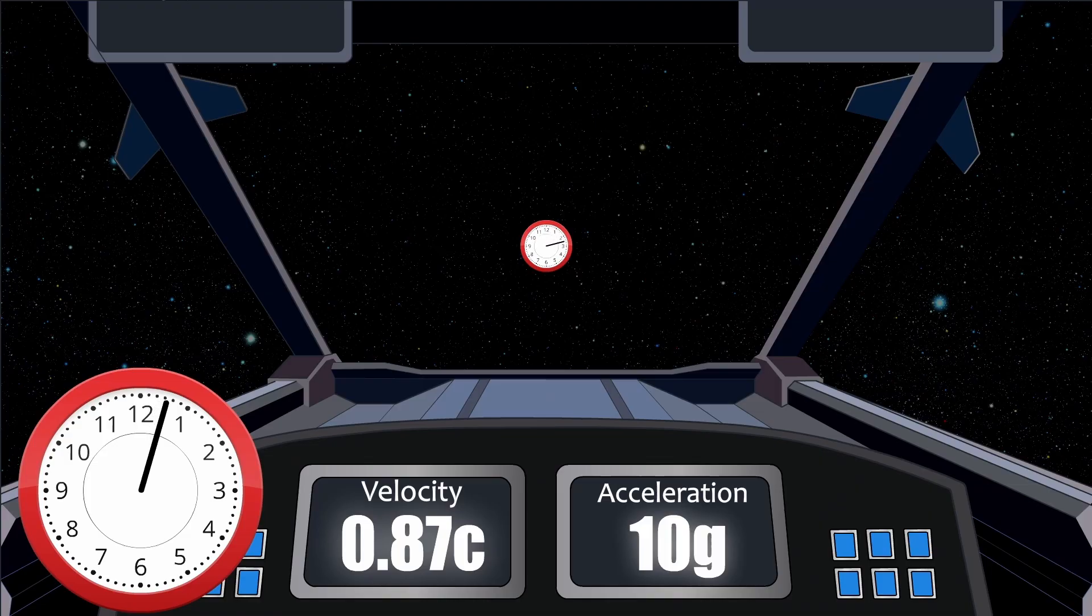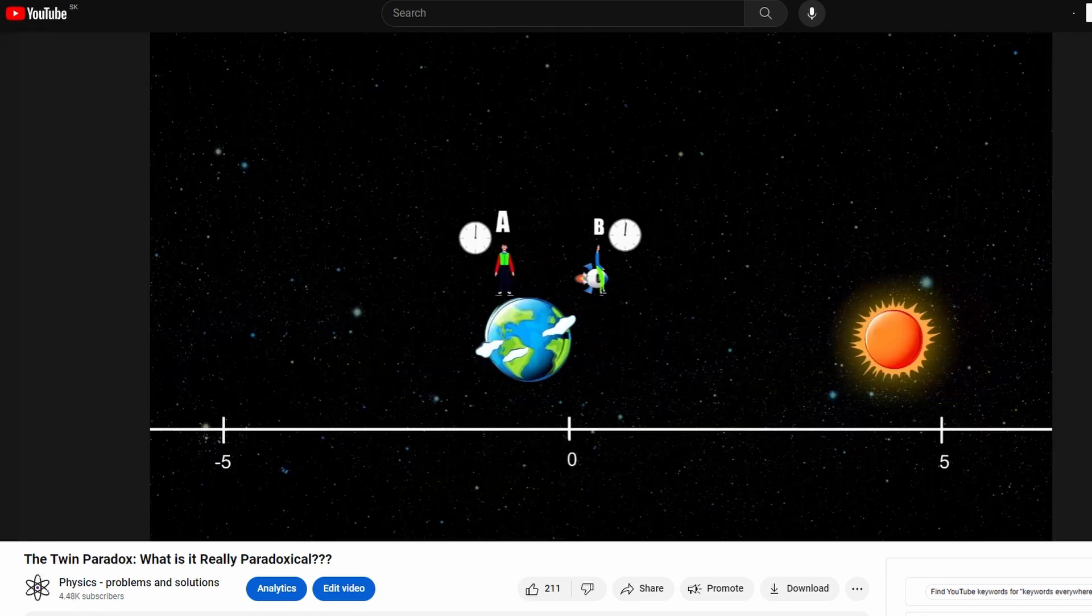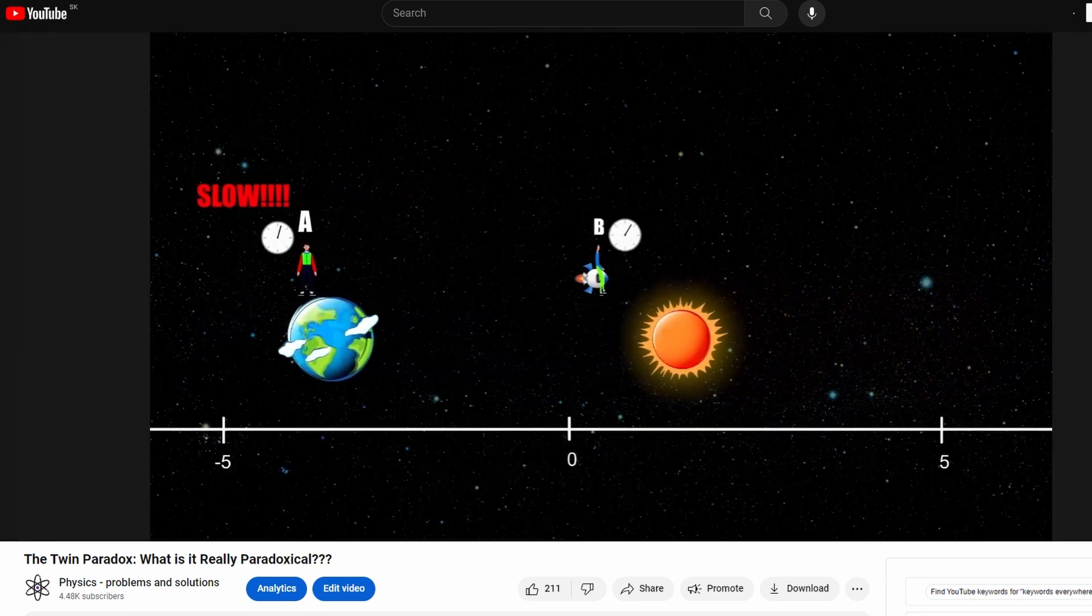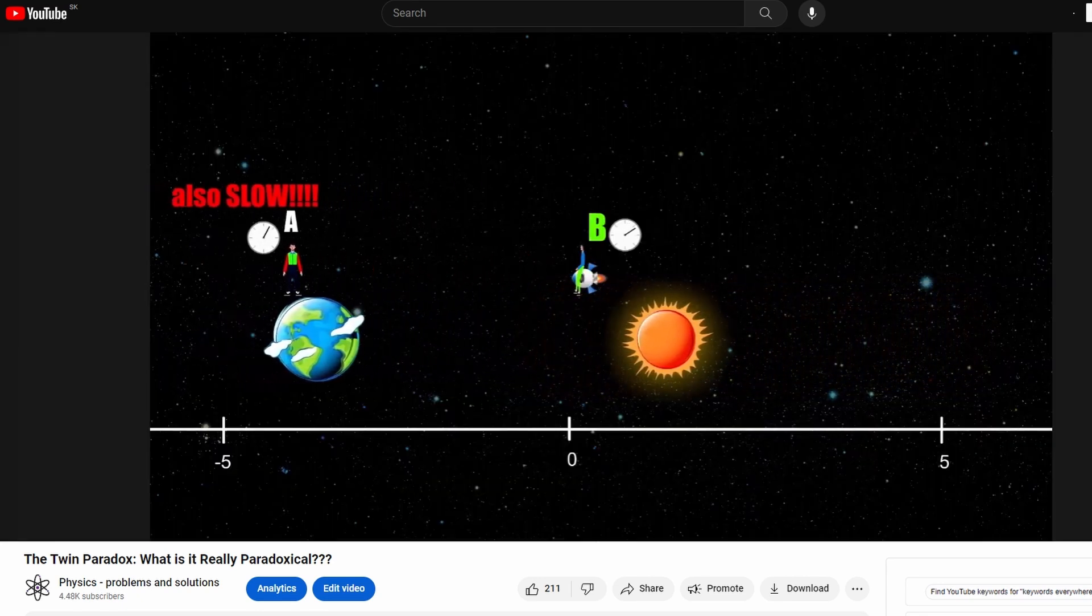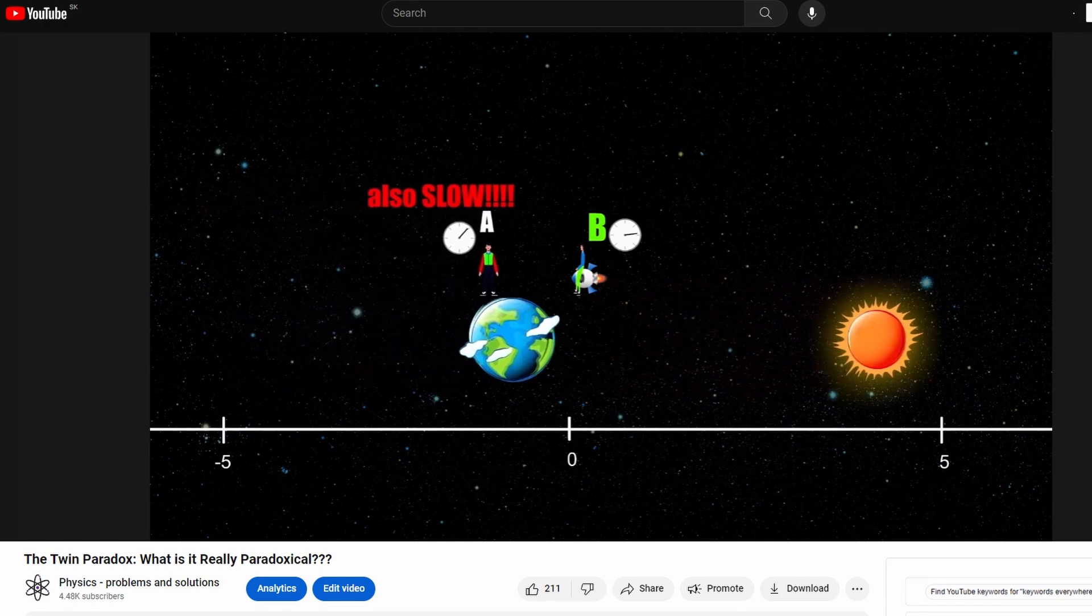What an observer can figure out based on the given data, for example here. But if special relativity is correct, the observer B must have seen the observer A clock tick slower in both, outgoing and ingoing part.